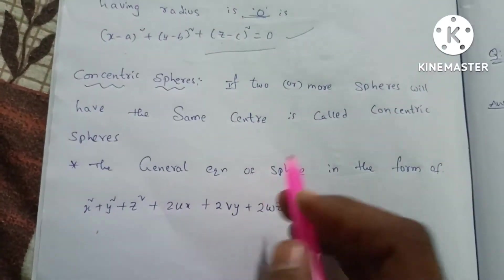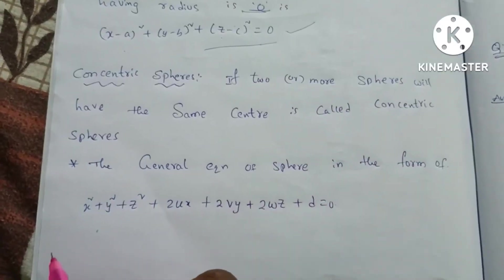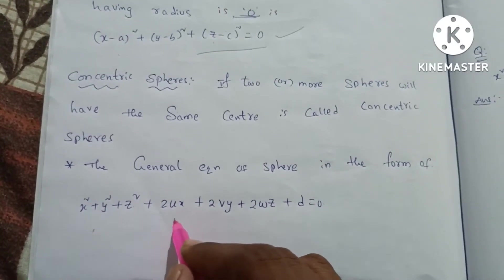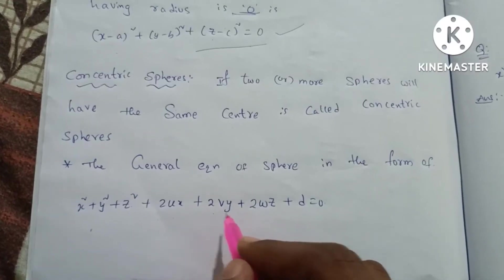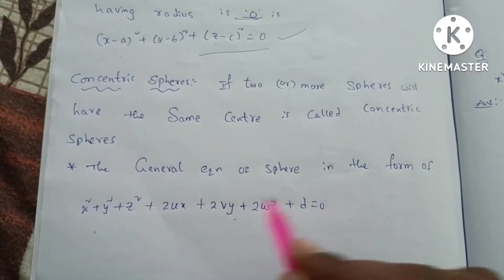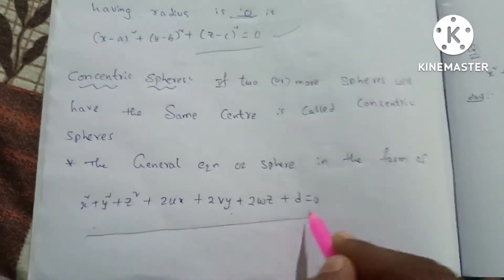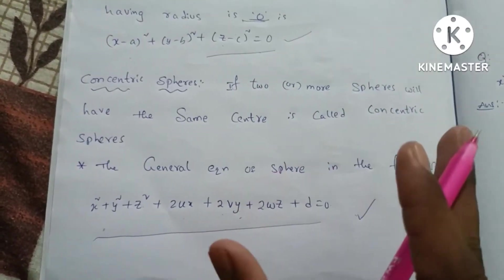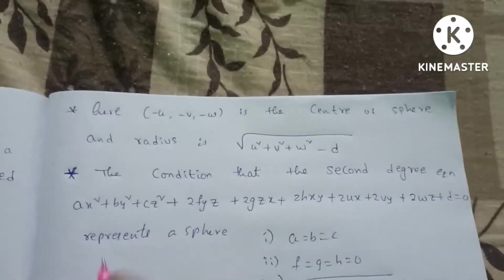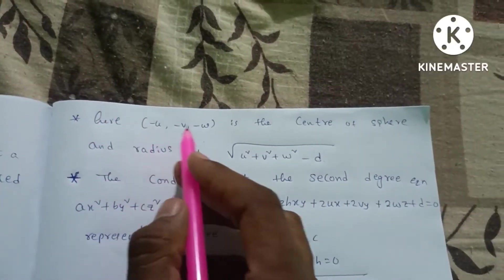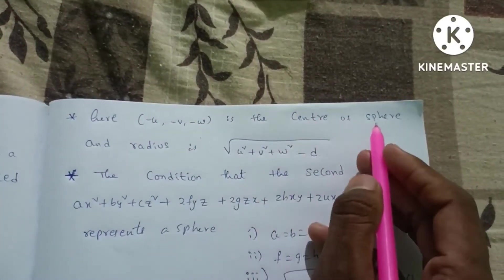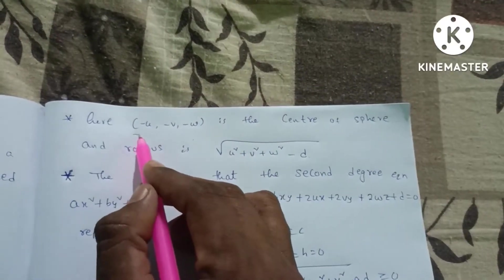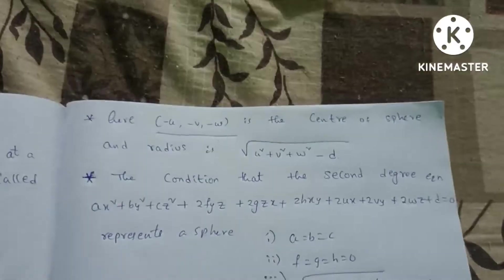General equation of sphere. The general equation of the sphere is: x square plus y square plus z square plus 2ux plus 2vy plus 2wz plus d is equal to 0. This is very important — this is the general equation. Here, minus u, minus v, minus w is the center of the sphere.